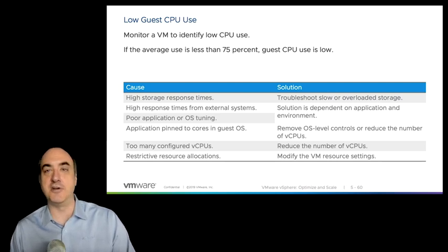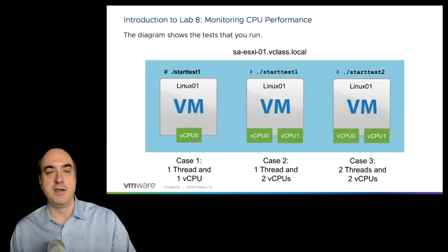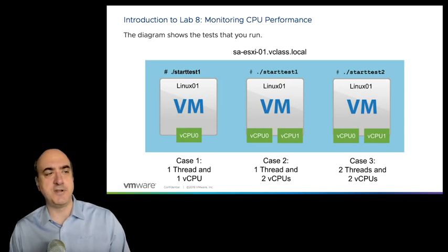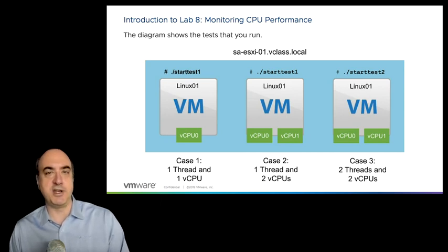So there are different metrics you can see in ESXtop: you've got VM wait, then co-stop for pinned or too many configured virtual CPUs, and then MLMTD to report restrictive resource allocations. In this exercise, you have a Linux VM in your compute cluster configured with a single virtual CPU. You're going to run a script in that VM — wait for it to boot up, log into its console, and launch a script called start_test_one, which launches a single-threaded instance of MySQL.